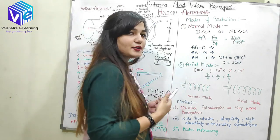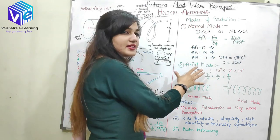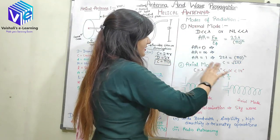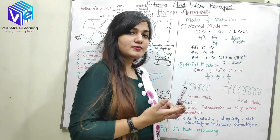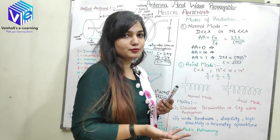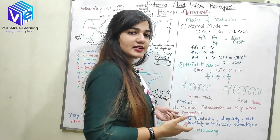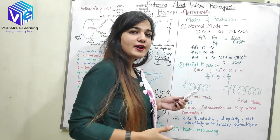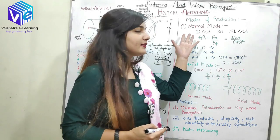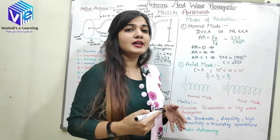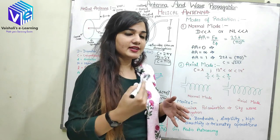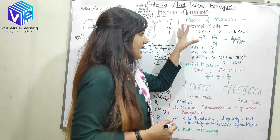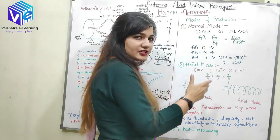Now we will see the modes of radiation. There are two modes: normal mode and axial mode. If the antenna satisfies the normal mode criteria, it is called normal mode; if it satisfies the axial mode criteria, it is called axial mode. In normal mode, radiation should be in a perpendicular direction to the axis of the antenna. In axial mode, the radiation pattern should be in the direction of the axis of the antenna. We can design the antenna to work in either mode by applying the respective conditions.